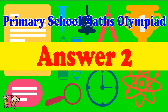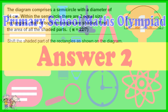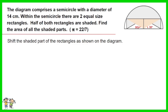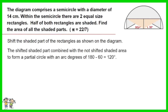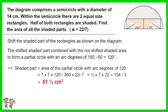Answer for Question 2. Shift the shaded part of the rectangles as shown on the diagram. The shifted shaded part combined with the not-shifted shaded area forms a partial circle with an arc of 180 − 30 − 30 = 120 degrees. As such the shaded part equals the area of the partial circle with arc of 120 degrees. Work out the equation. The answer is 51 and one third centimeters squared.